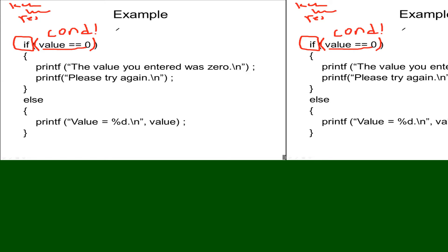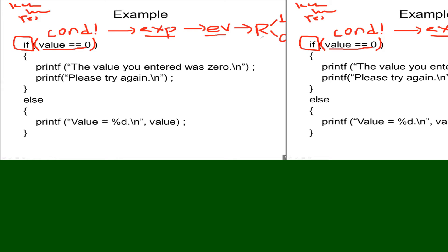The condition is most of the time an expression. We evaluate that expression to find the result. The condition result must be either true or false. After the condition, we put curly brackets — these are called code blocks. Remember: code blocks are 'all or none,' like a toast.